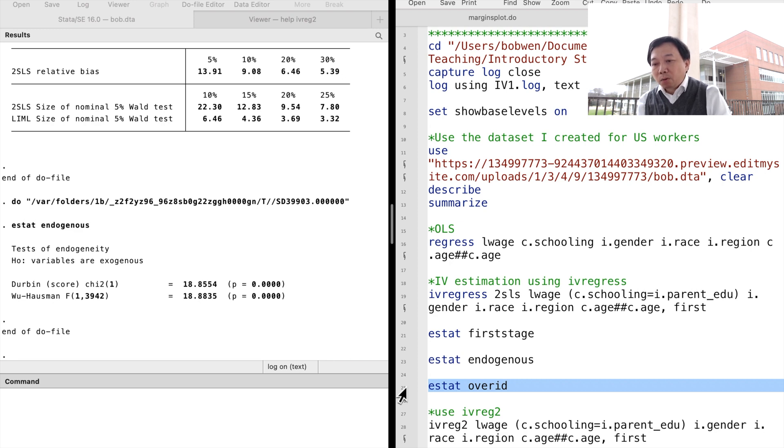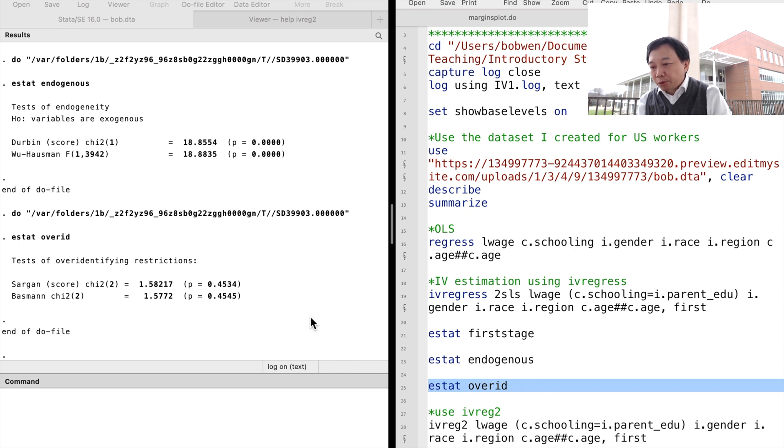We can perform the over-identifying restriction test. We could not reject the null hypothesis that all the instruments could be exogenous. So our instrumental variables pass all three post-estimation tests.